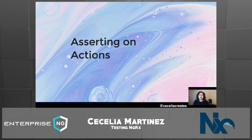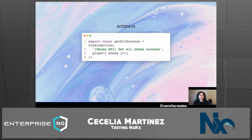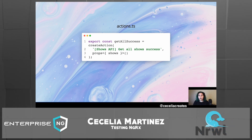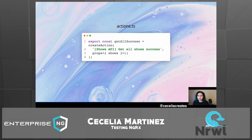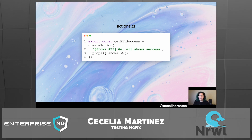The first thing we're going to talk about is asserting on NGRX actions. This is an example of one of our actions in our actions.ts file within our NGRX store folder. We have a get all success action that has a type of 'shows API get all shows success' and accepts a prop of shows, which is an array of the shows displayed on the page. We have four TV shows displayed, and when the page loads, the get all success action fires with the shows prop.